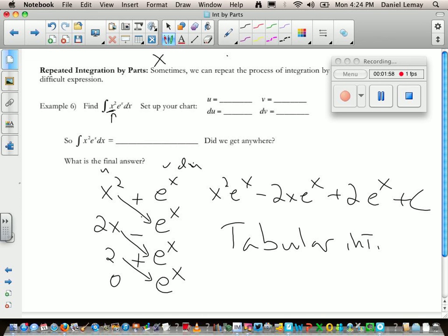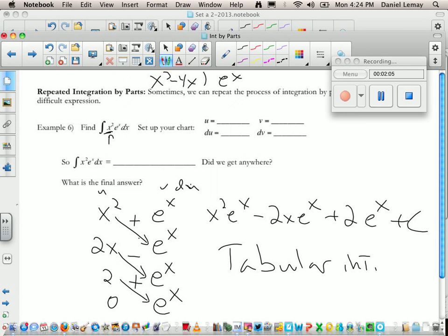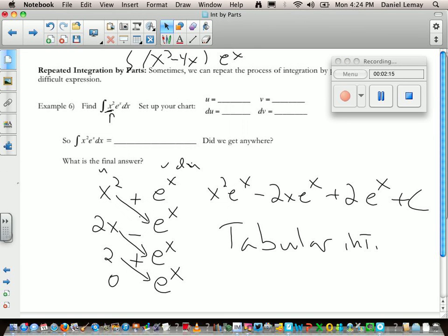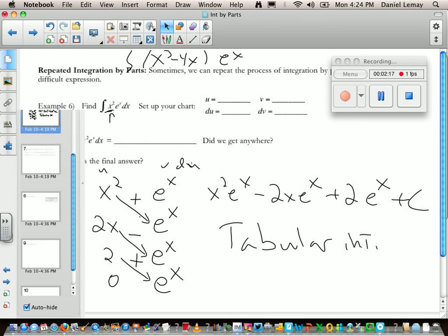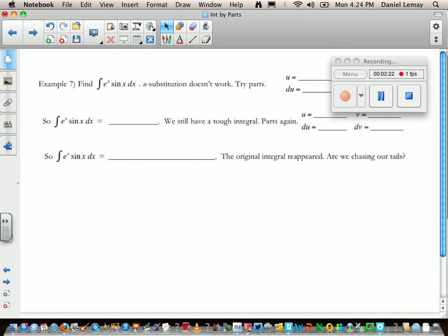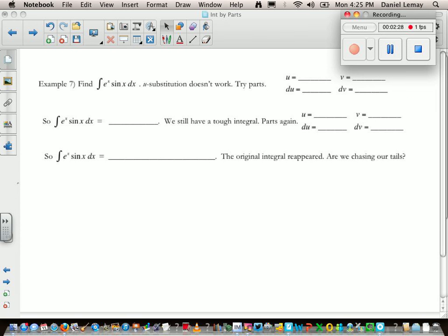This is called tabular integration. It only works when you have a polynomial that you're starting with. It works really handy when you have a larger power, like if I had something like x cubed minus 4x times e to the x. That would be something I would want to use tabular integration with. The next problem we're going to do won't work for tabular integration.